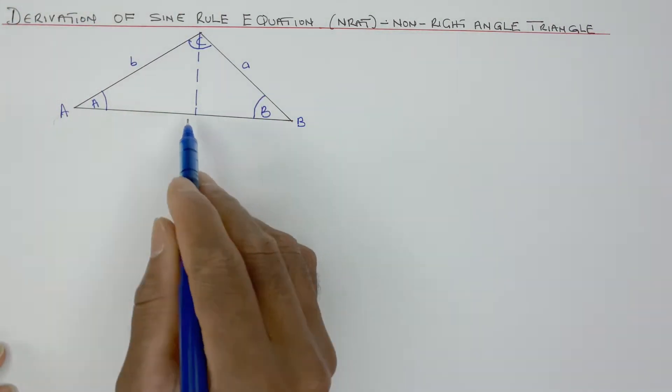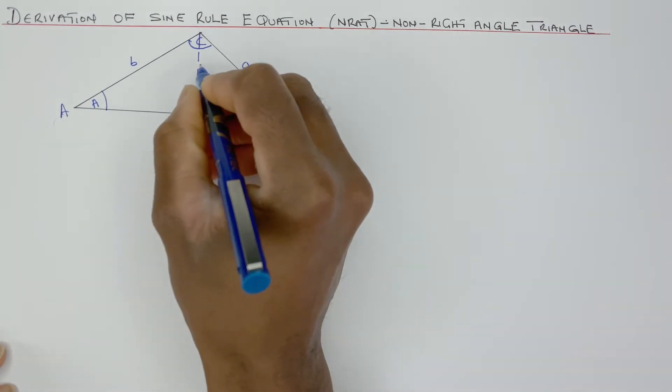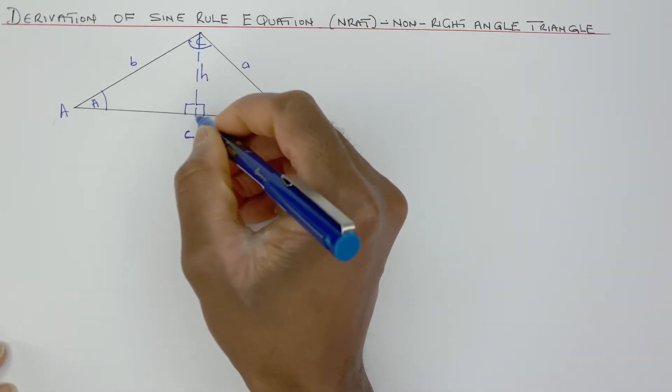This line is perpendicular to AB. So therefore, it's a right angle. And this height here, height H, is the distance from this point to that point.